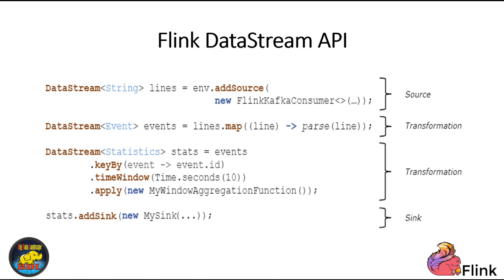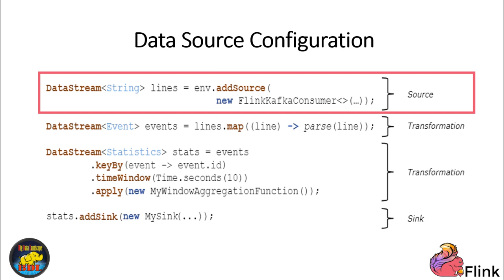Let's break down its key components and functionalities. In Flink programs, you typically start by defining a data source. This source can be connected to various external systems, but it's especially well-suited for message brokers with replayable topics, such as Apache Kafka. Flink is designed to handle message offsets or pointers that indicate which messages have been consumed. This capability is crucial for achieving reliable at-least-once and even exactly-once end-to-end processing guarantees.